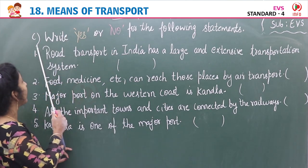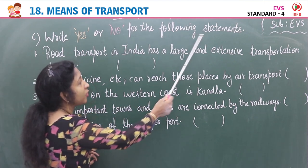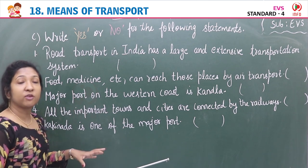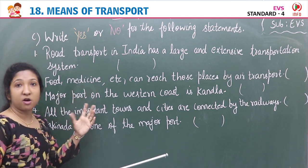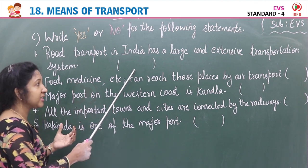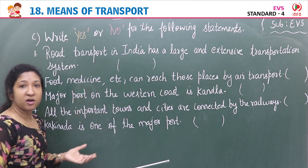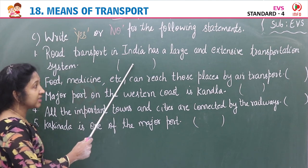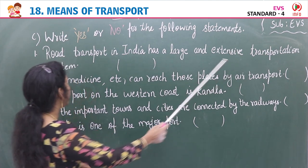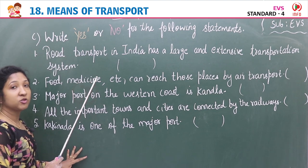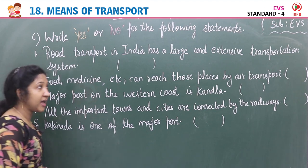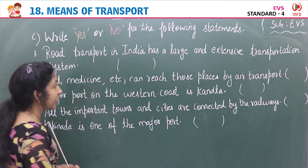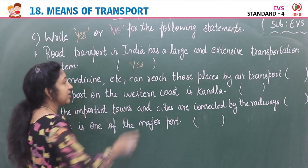Exercise C: Write yes or no for the following statements. Read each statement and check whether it is true or false. If true, write yes; if false, write no. Statement one: Road transport in India has a large and extensive transportation system. This is a correct statement, so write yes.